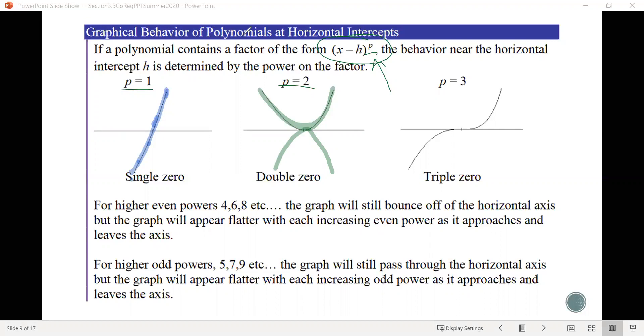And then for a multiplicity of 3, notice that it does this thing where it kind of comes up to the horizontal axis, kind of flattens out, and then goes up and beyond. And just like the last one, there is another way this could come in. It could also do something like this, so go in the other direction.